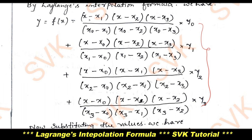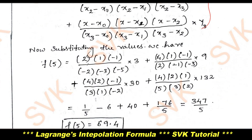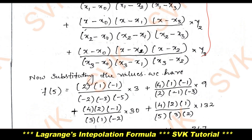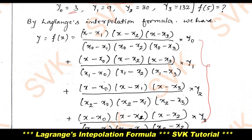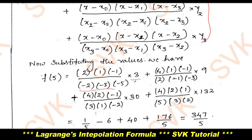After noting down this formula, go with substitution. Here x is 5. Substitute that value along with x0, x1, x2, x3 and y0, y1, y2, y3. For the first term: (5−x1) = 5−3 = 2, (5−x2) = 5−4 = 1, (5−x3) = 5−6 = −1, all divided by x0=1: (1−2)=−1, (1−3)=−2, (1−6)=−5 — wait, (1−4)=−3 and (1−6)=−5. This is what I have written and multiplied by y0.